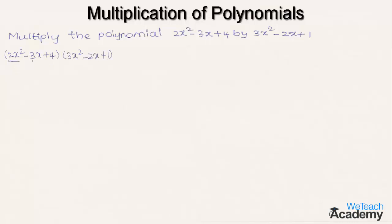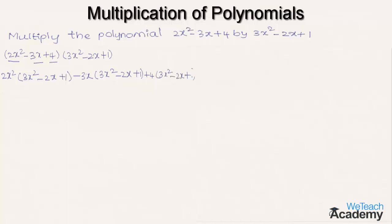Now let us multiply each and every term of the first polynomial with the group of the second polynomial. By multiplying, we get 2x² into (3x² minus 2x plus 1), minus 3x into (3x² minus 2x plus 1), and plus 4 into (3x² minus 2x plus 1).